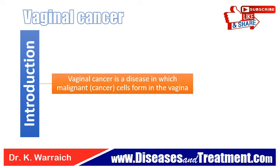The vagina is the canal leading from the cervix, which is the opening of the uterus, to the outside of the body. At birth, a baby passes out of the body through the vaginal canal. Vaginal cancer is not common, and when it's found in the early stages, it can often be cured.